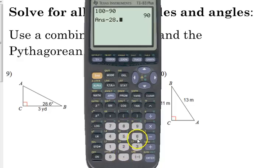So if we take away the 28.6 from 90, we get that the angle A, we use capital letters for angles, is 61.4 degrees.